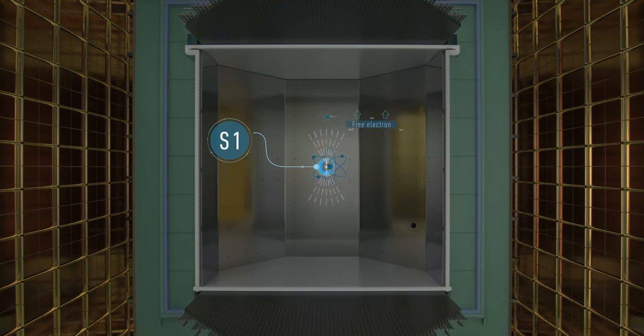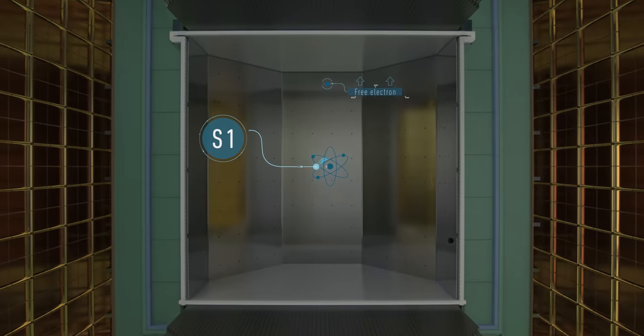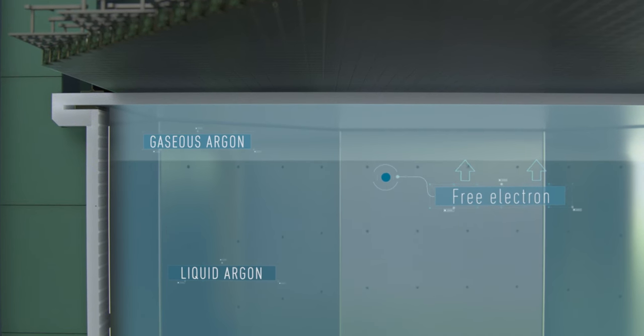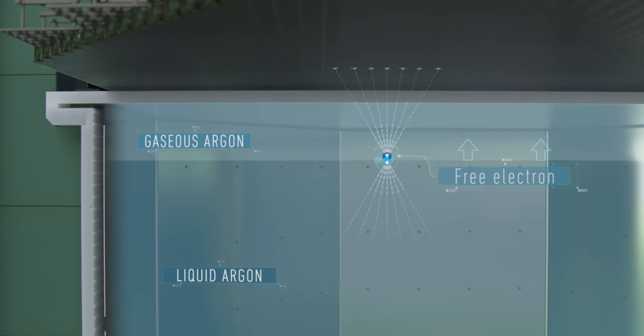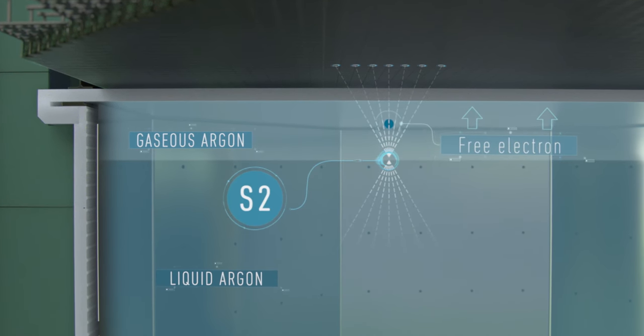The free electrons produced in the collision drift upwards to the surface of the liquid argon and are pulled into the gaseous argon, where they produce secondary scintillation photons, also viewed by the silicon PM arrays.